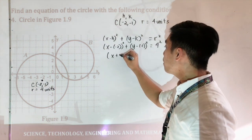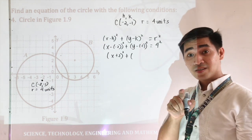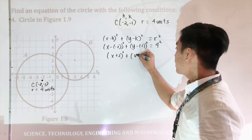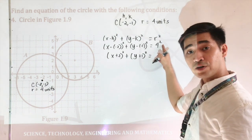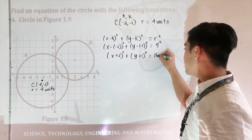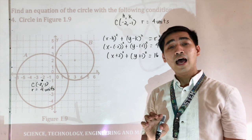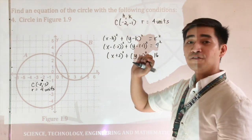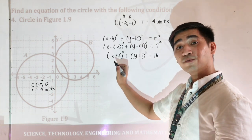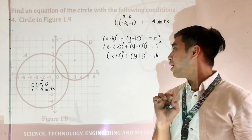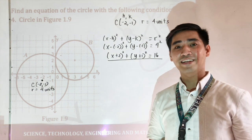Therefore, that is X plus 2 quantity squared, and negative minus negative becomes positive, so Y plus 1 quantity squared is equal to 4 squared, which is 16. Therefore, the standard equation of the circle having center at negative 2 and negative 1 with radius equal to 4 is X plus 2 quantity squared plus Y plus 1 quantity squared is equal to 16. And that is the final answer.